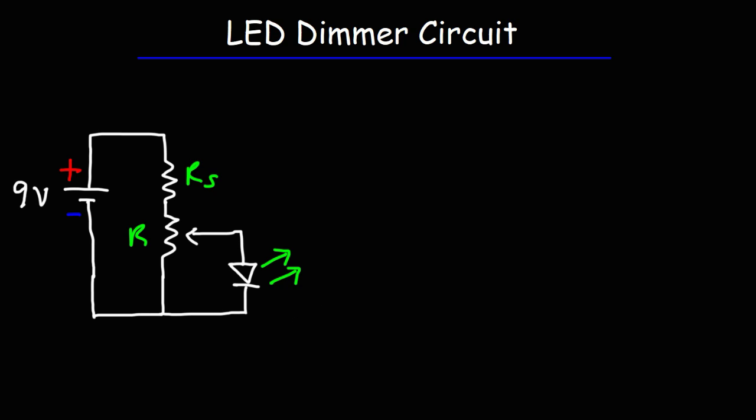So attached to the potentiometer is a green LED with a voltage drop of 2 volts. Now the brightness of the LED is controlled by the potentiometer.